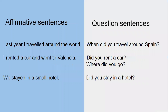Here are some examples in an affirmative sentence and question sentence. Last year, I traveled around the world. When did you travel around Spain? I rented a car and went to Valencia. Did you rent a car? Where did you go? We stayed in a small hotel. Did you stay in a hotel?